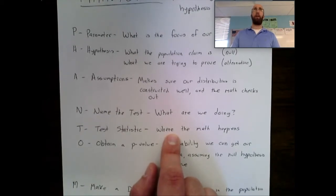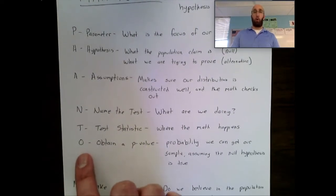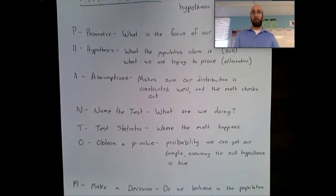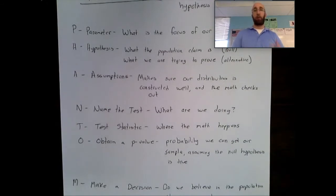Once we have a test statistic, we're going to have typically Z or T scores here. We're going to obtain a p-value. That is the O of phantoms. Obtain a p-value. This one's a little bit tough to kind of talk in generalities, a little bit easier to see when we get into specific problems. But the best way I can define it is, it's the probability we can get our sample assuming the null hypothesis is true. So what is the probability of attaining the sample we just got?